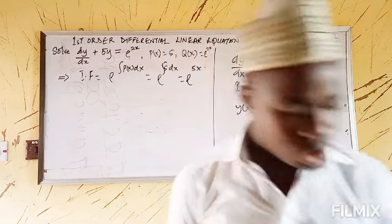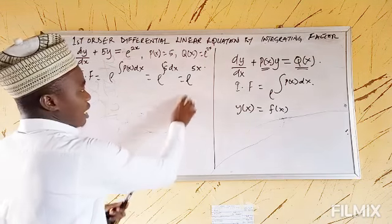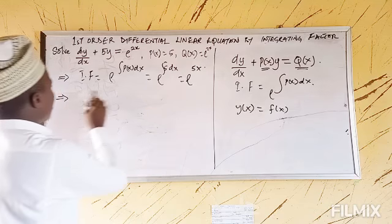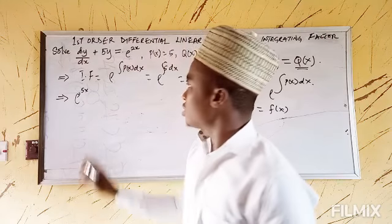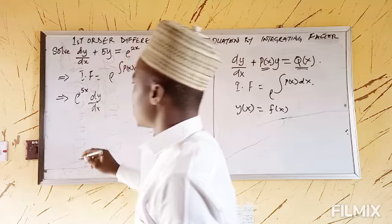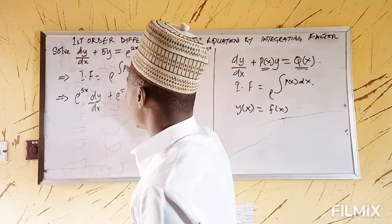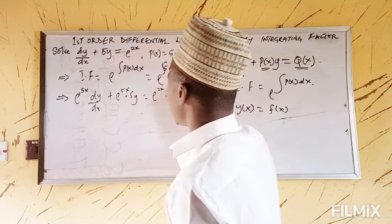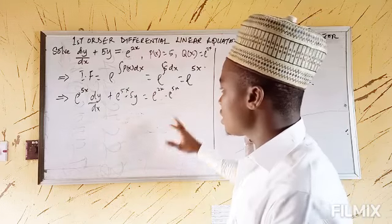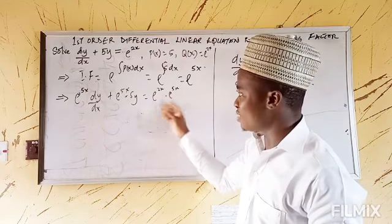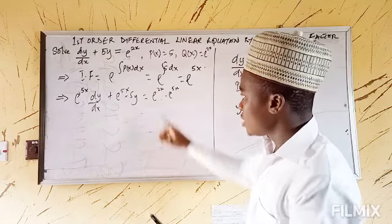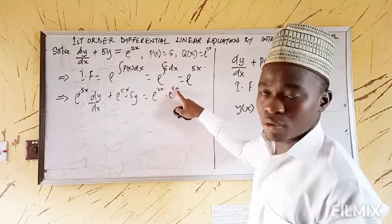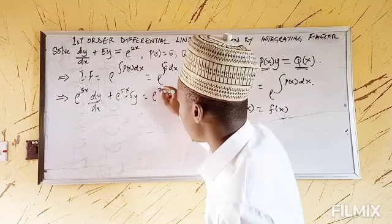The next step is to multiply through the equation by this integrating factor. So we are going to have e^(5x)·dy/dx plus e^(5x)·5y equals e^(2x)·e^(5x). Now, from the law of indices, since both terms are in the same base e and we are multiplying, the powers are added: 2x plus 5x gives us 7x. Therefore, the right-hand side becomes e to the power 7x.